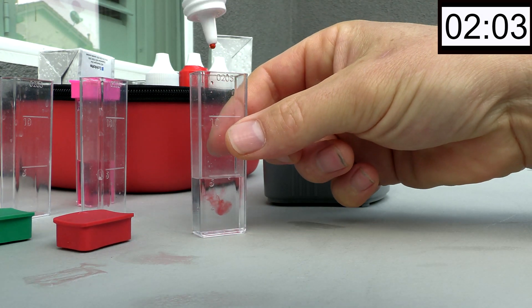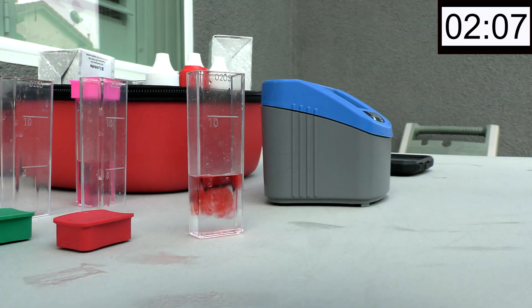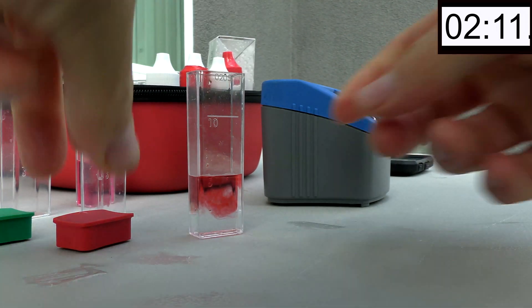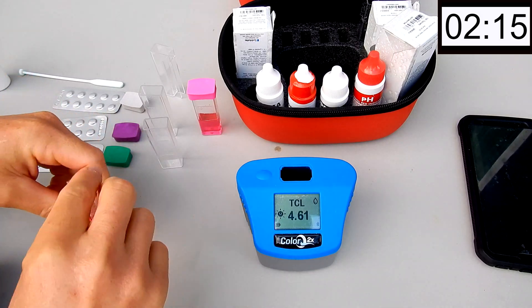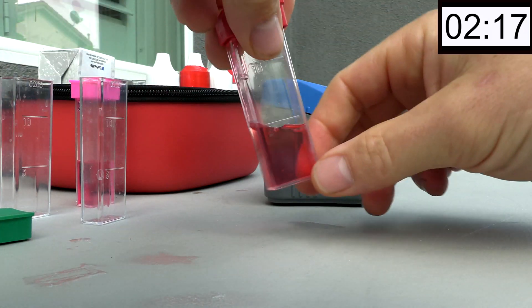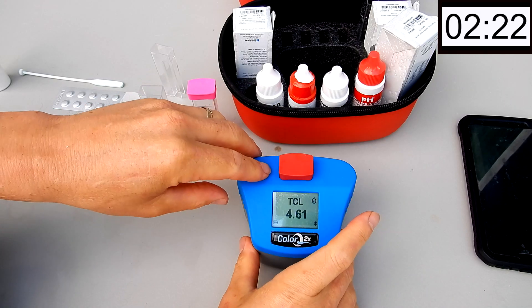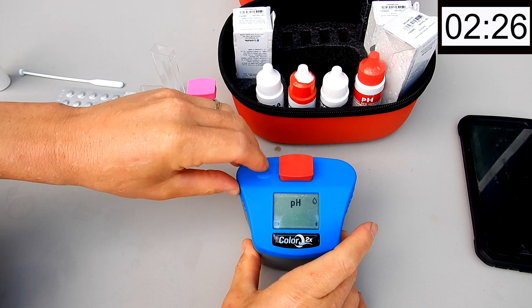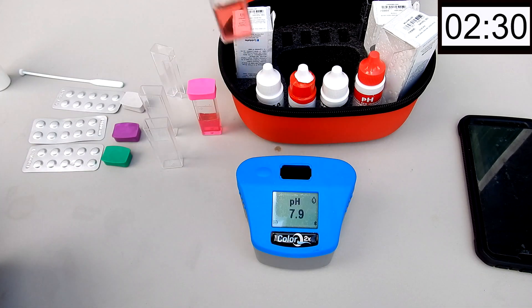5 drops of the Phenol Red. I'm going to skip the Bromine by hitting the button twice quickly. The pH is 7.9.